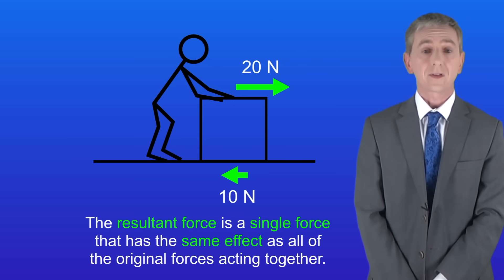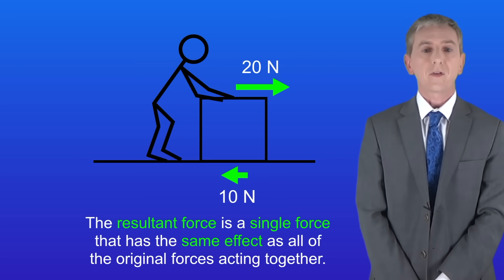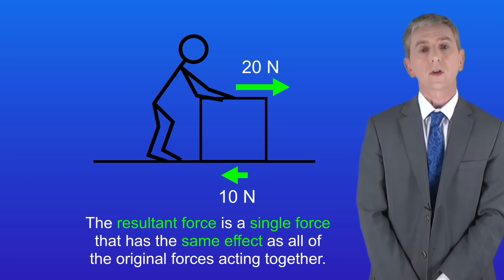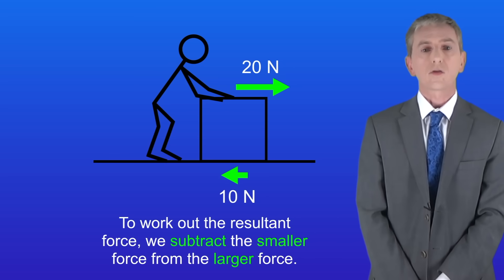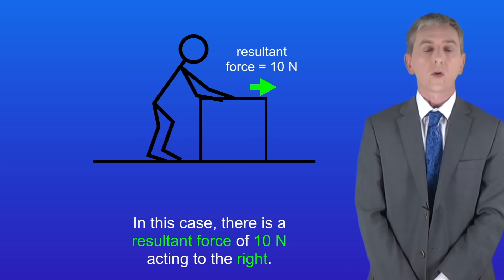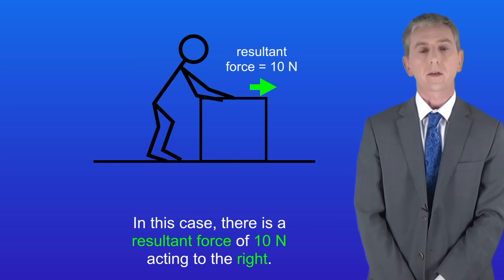Now the resultant force is a single force that has the same effect as all of the original forces acting together. To work out the resultant force, we subtract the smaller force from the larger force. In this case there's a resultant force of 10 newtons acting to the right.